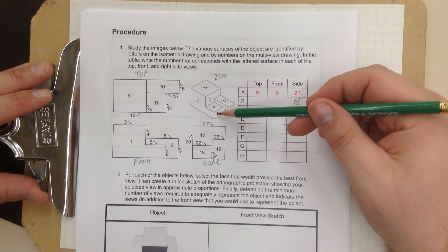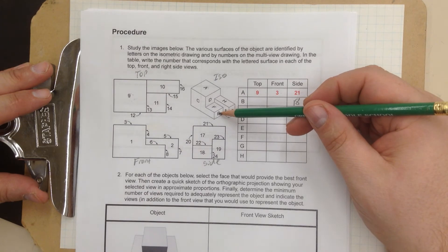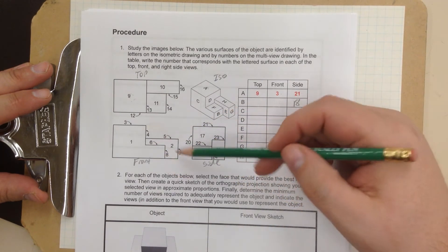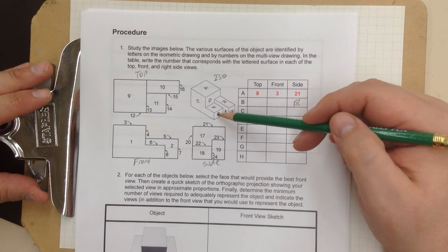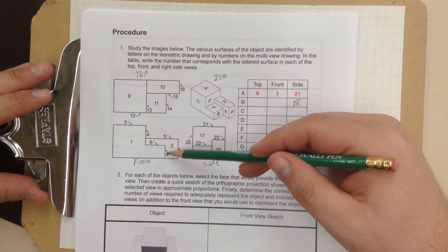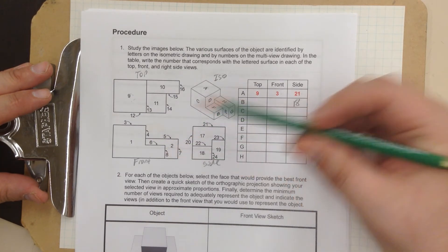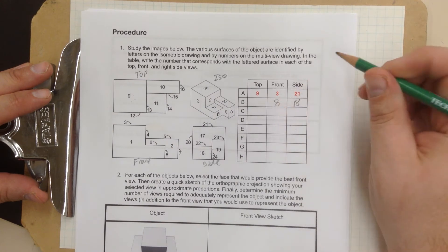If I can find letter B in the other drawing, let's try front. Number 8 is pointing to that part. So it's right there. And there it is. So for the front, it's going to be number 8.